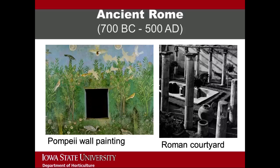Vesuvius erupted in 79 AD and preserved quite a bit of Pompeii's gardens. The image on the left is a painting from that time, uncovered by archaeologists. The image on the right is a reconstructed courtyard space that would have been prevalent in gardens of this time period. It shows a basin for water in the middle and a number of sculpture elements.